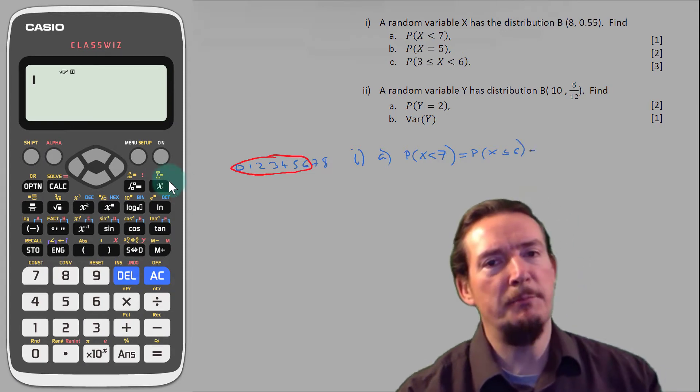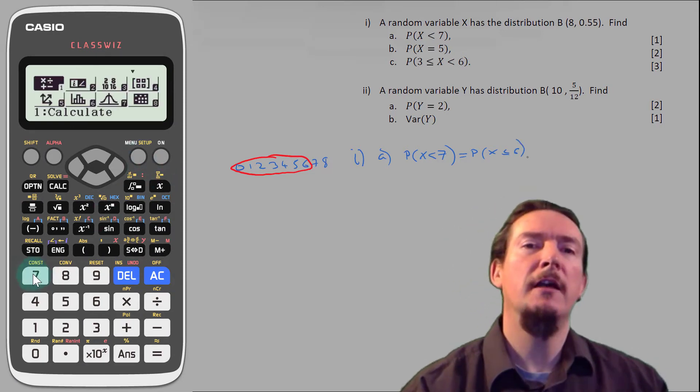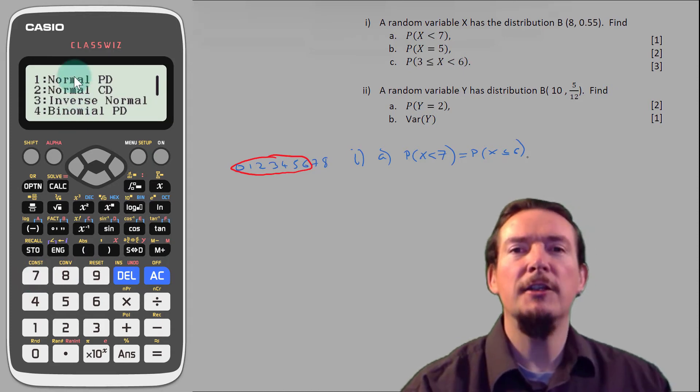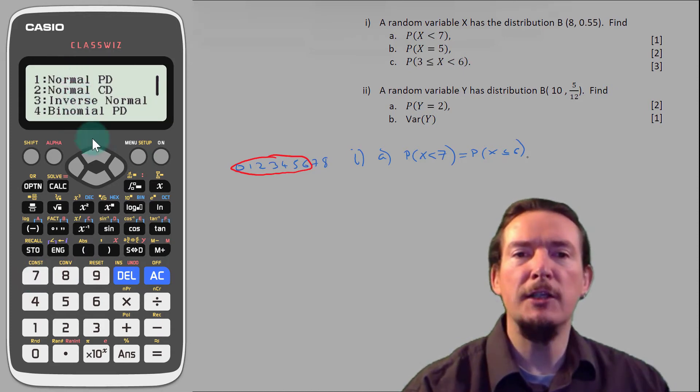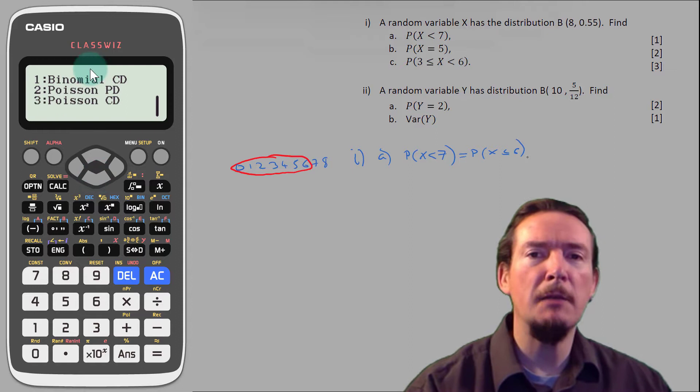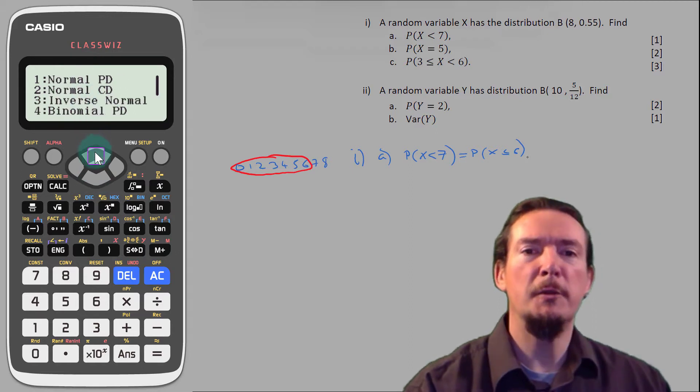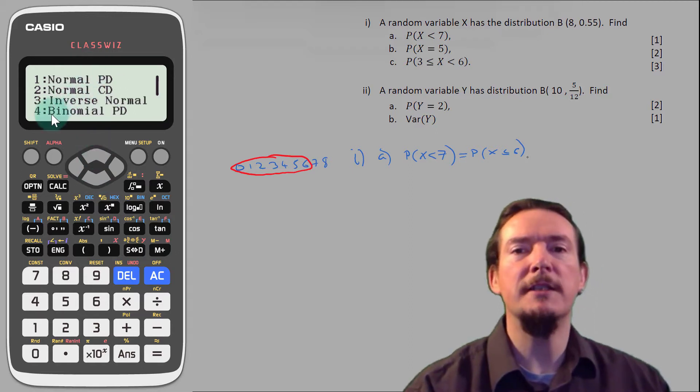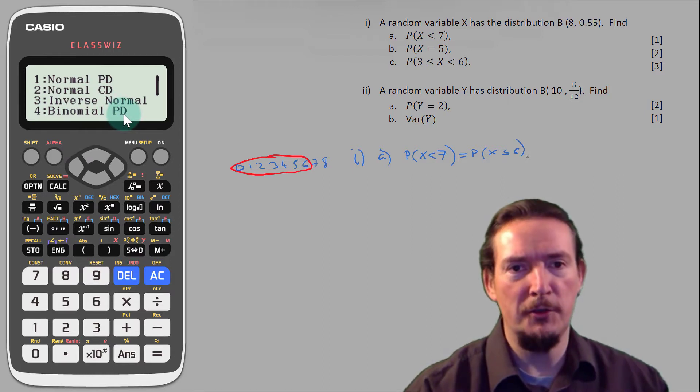First up, let's put the calculator in distribution mode by pressing Menu and then 7. You can see that the classwiz can produce values for the normal, binomial and Poisson distributions. We will look at the others in future videos, but today we are going to focus solely on the binomial distribution.